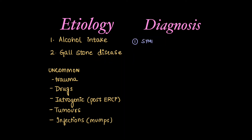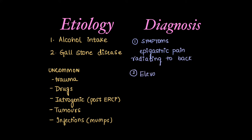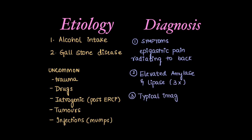Diagnosis is made when any two of these criteria are satisfied: symptoms of epigastric pain radiating to the back, elevated amylase and lipase more than three times the normal, or typical imaging features present on ultrasound, CT, or MRI imaging.